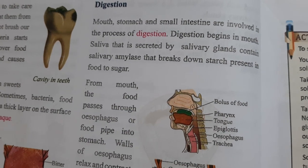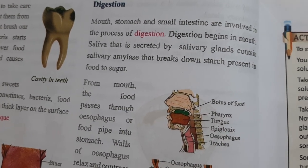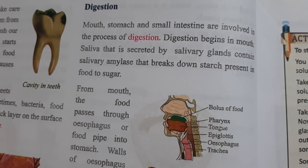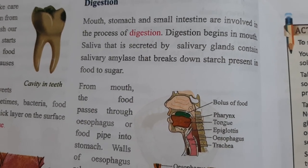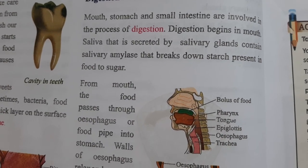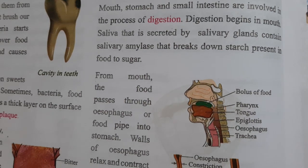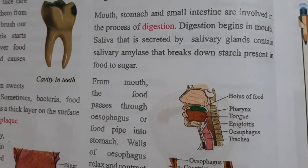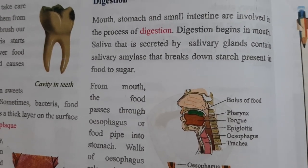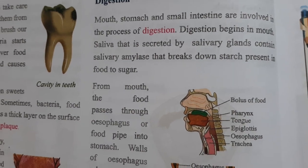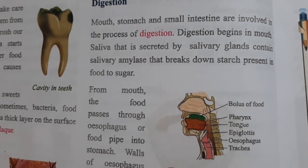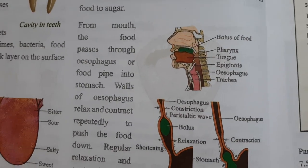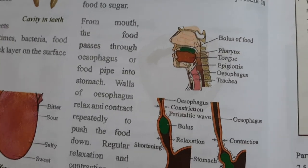The next process after ingestion is digestion. The mouth, stomach, and small intestine are involved in digestion. Digestion begins in the mouth. Saliva secreted by salivary glands contains salivary amylase, which is the enzyme that breaks down starch present in food.